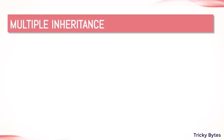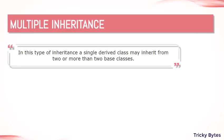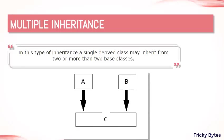The next type of inheritance is multiple inheritance. Multiple inheritance is a type of inheritance in which a single derived class may inherit from two or more than two base classes. So the single derived class or sub class inherits from two or more super classes.